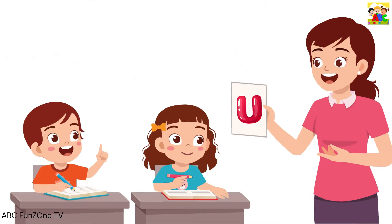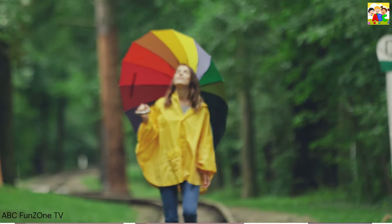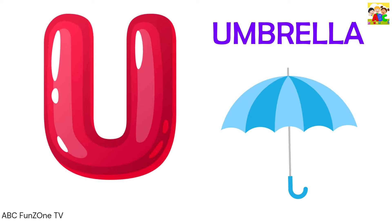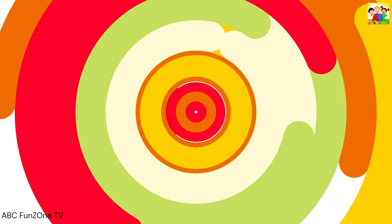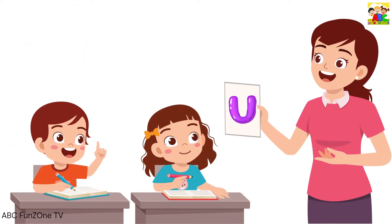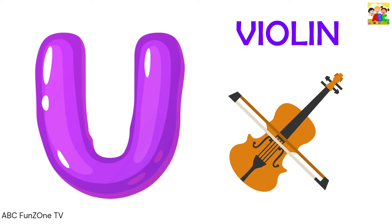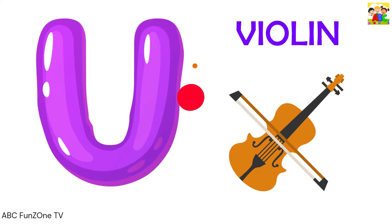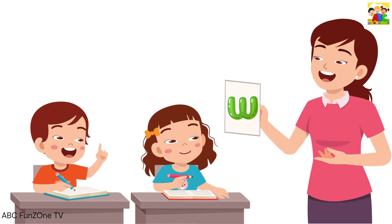U is for Umbrella, U-Umbrella. V is for Violin, V-V-Violin, V-Violin.